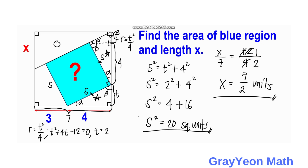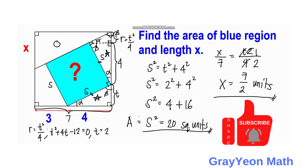For the final answers: the area of the blue square is 20 square units, and the unknown length x is 7 over 2, or 3.5 units. That is our answer. Thank you for watching. Please like the video if you like our solution, and don't forget to subscribe to the channel and hit the bell icon so you will be updated for more math videos like this.